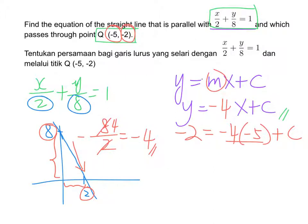Negative 4 times negative 5 is positive 20. So when we move positive 20 over to the left-hand side, it is negative 20 here. So c is negative 22.